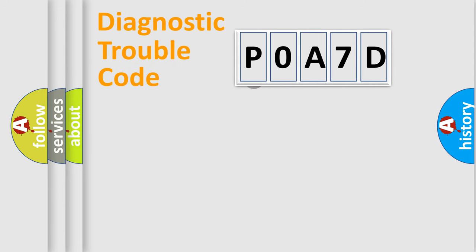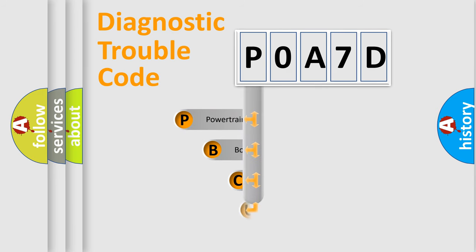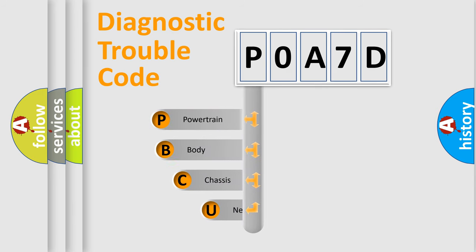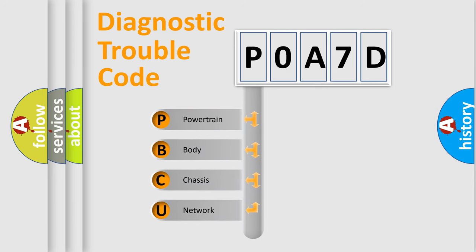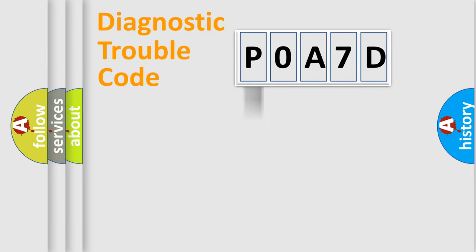First, let's look at the history of diagnostic fault code composition according to the OBD2 protocol, which is unified for all automakers since 2000. We divide the electric system of an automobile into four basic units: powertrain, body, chassis, and network. This distribution is defined in the first character of the code.